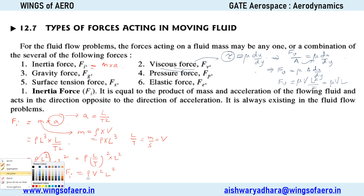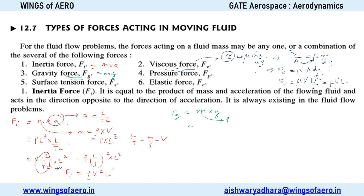Gravity force: F_g equals mass times g, which is rho times volume times g, giving rho times L cubed times g. G is kept as is since it has a fixed value (9.81). So gravity force equals rho g L cubed. Pressure force: pressure times area gives P times L squared. The pressure P is not changed since it is a given variable in problems — so pressure force equals P times L squared.